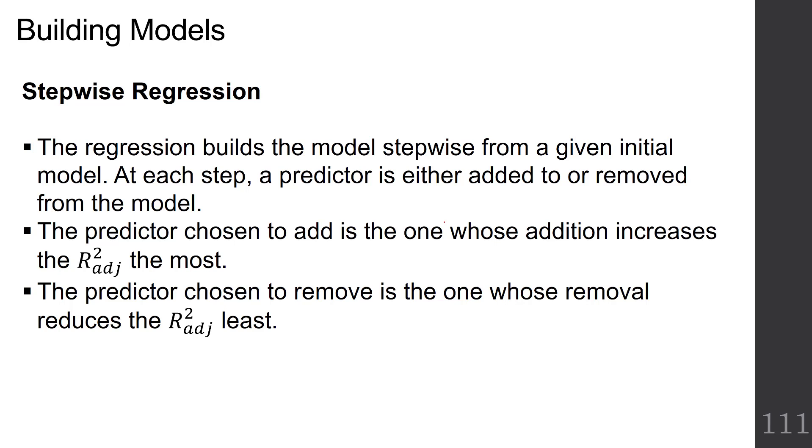And then we have stepwise regression. Stepwise regression builds the model stepwise from a given initial model. At each step, a predictor is either added to or removed from the model. The predictor chosen to add is the one whose addition increases the adjusted R-squared the most. The predictor chosen to remove is the one whose removal reduces R-squared adjusted the least.